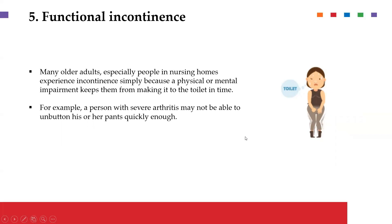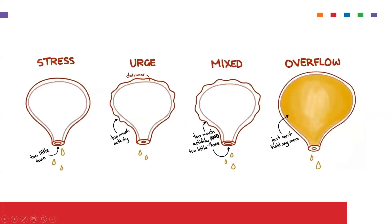Functional incontinence is the last type we will discuss. It normally occurs in the older population and results from a physical or mental impairment that hinders a person from getting to the toilet in time. For example, a person with severe arthritis may not be able to button their pants quickly enough, or they may not be able to walk fast enough to get to the bathroom in time to relieve themselves.